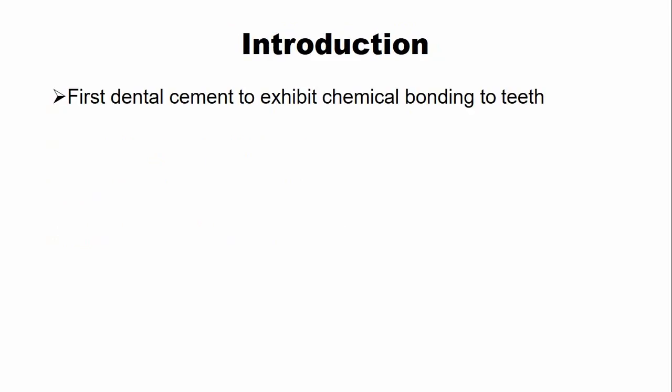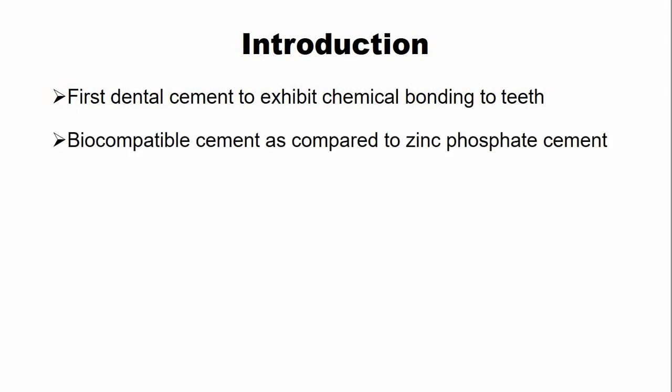The polycarboxylate dental cement is the first dental cement that exhibits chemical bonding to the tooth structure. Previous dental cements such as zinc oxide eugenol cement or zinc phosphate cement form only a mechanical bond with the tooth structure. This cement is biocompatible, meaning it shows less adverse reactions compared to previous dental cements such as zinc phosphate dental cement.